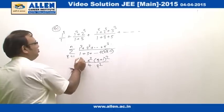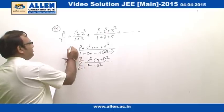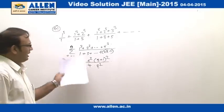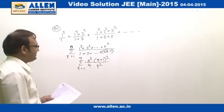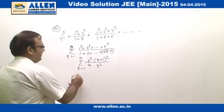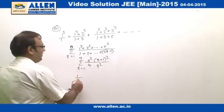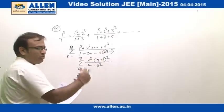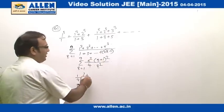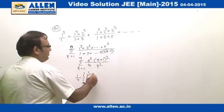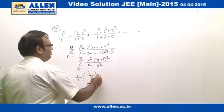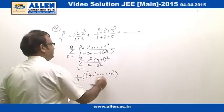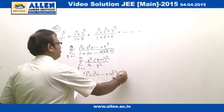We have to add up to 9 terms, so we will go up to 9. Now r² gets cancelled and we have (1/4) times (2²+3²+...+10²). We can rewrite this as (1²+2²+...+10²) minus 1².